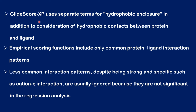For example, Glide score uses hydrophobic enclosure — in addition to considering hydrophobic contacts between the protein and ligand, it also uses an additional term known as hydrophobic enclosure. Another notable point in empirical scoring functions is that they include only common protein-ligand interaction patterns. Less common interaction patterns are ignored even though they may be strong, such as cation-pi interactions, because they are not statistically significant. Since regression analysis is also performed along with the empirical form, less significant interactions are ignored.